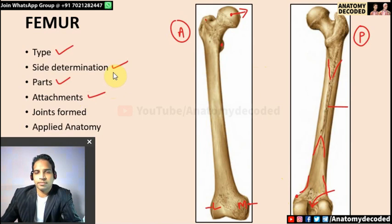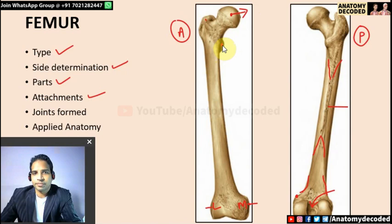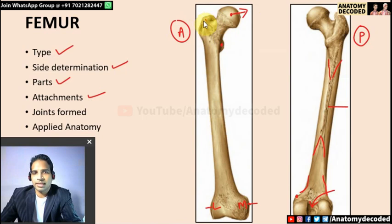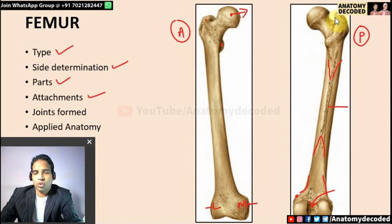Attachments of the femur: the lesser trochanter gives attachment to psoas major and iliacus. The tip of the greater trochanter gives attachment to a muscle; the anterior ridge gives attachment to gluteus minimus; the lateral ridge gives attachment to gluteus medius. Gluteus maximus inserts onto the gluteal tuberosity (one-fourth), with three-fourths onto the iliotibial tract.